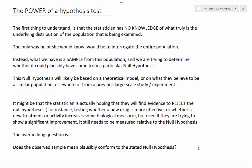The null hypothesis will likely be based on a theoretical model, on what they believe to be a similar population elsewhere, or from a previous large-scale study or experiment. It might be that the statistician is actually hoping to find evidence to reject the null hypothesis — for instance, testing whether a new drug is more effective or whether a new treatment increases some biological measure. But even then, it still needs to be measured relative to the null hypothesis. So the overarching question is: does the observed sample mean plausibly conform to a stated null hypothesis?